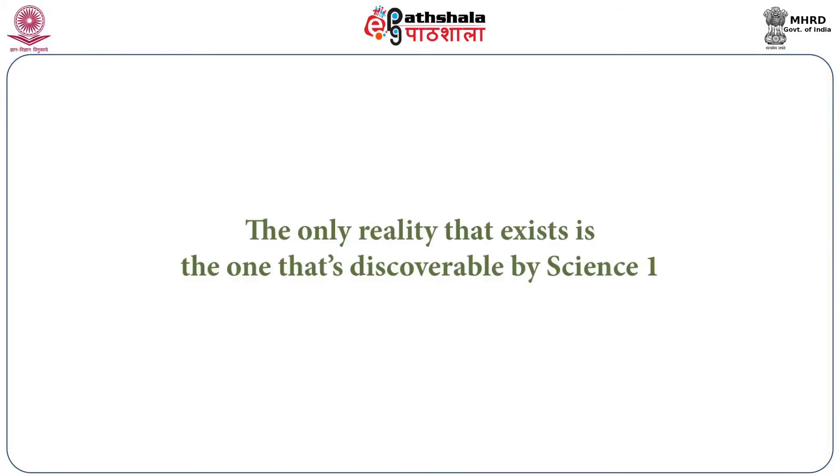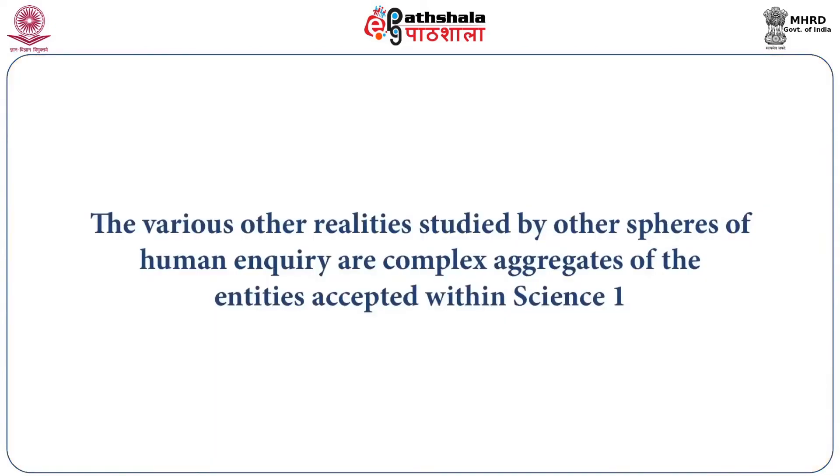Central to scientism is the notion of reduction at two levels — explanatory and ontological. Scientism claims that all fields of human inquiry can be reduced to the conceptual categories of a more fundamental science. For instance, anthropology can be reduced to biology, then biology to chemistry, and chemistry to quantum physics. At the ontological level, the only reality that exists is the one discoverable by Science One, and various realities postulated by other spheres such as sociology, cultural studies, and history are nothing but complex aggregates of entities accepted within Science One.